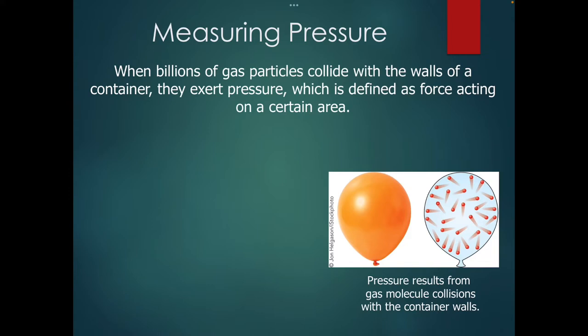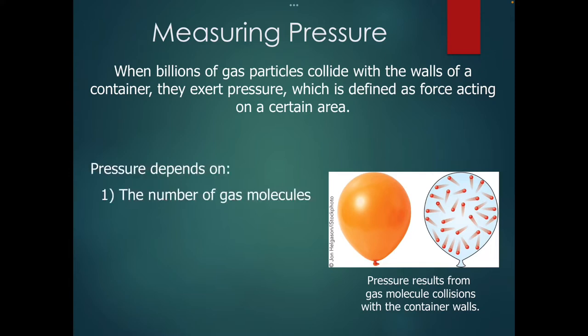We're going to measure pressure with respect to collisions. There are billions of gas particles even in a balloon, because atoms and molecules are really, really small — that's what we learned about when we talked about the mole. All of those particles colliding with the walls of the container is where we get pressure because they're constantly pushing outward. Pressure is technically defined as a force acting over a certain area, but in chemistry we're going to think about the number of collisions as it relates to pressure.